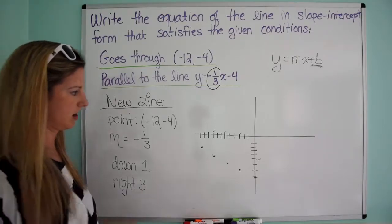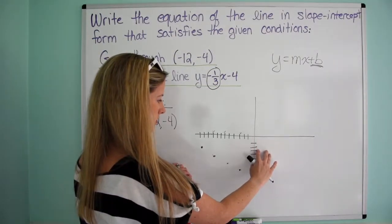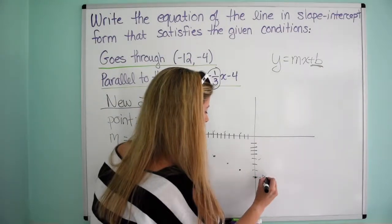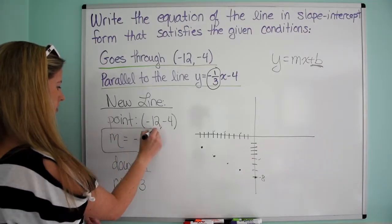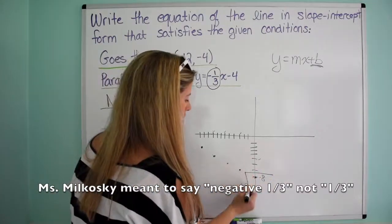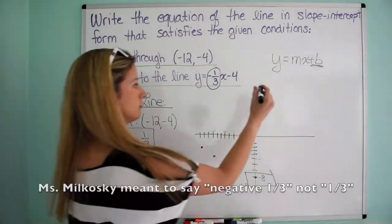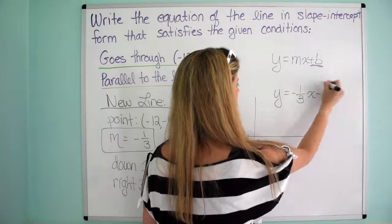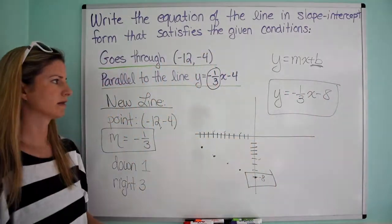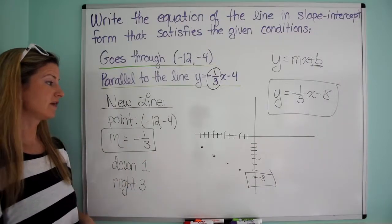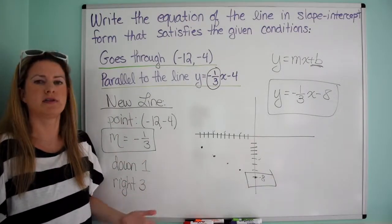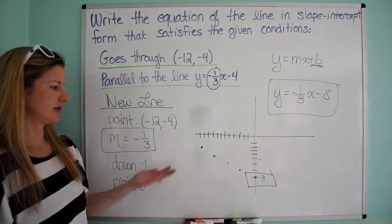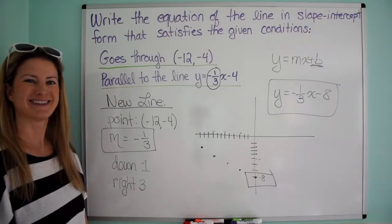Let's see where we are — counting down: 1, 2, 3, 4, 5, 6, 7, 8. This is negative 8. So I know my slope, which is negative one-third, and my y-intercept is negative 8. So I write this as y equals negative one-third x minus 8. That's another way to do it — graphing. Because we have all these different ways, we can do one way and use another to check.